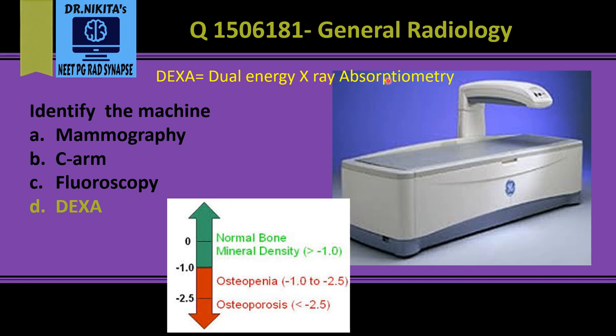Does DEXA have radiation exposure? Yes, because it is x-ray absorptiometry — it uses x-rays — but the exposure is very, very low, one tenth of that of a chest x-ray. What is dual energy? We use two energy x-rays: one to absorb the soft tissues and the other for the bones. We subtract the soft tissue component and finally get the bone mineral density.